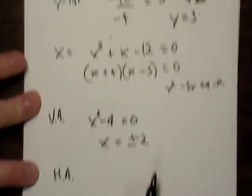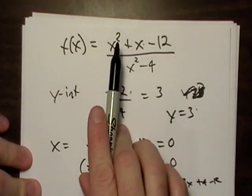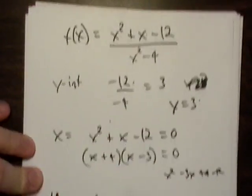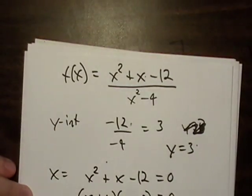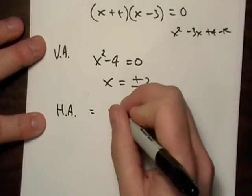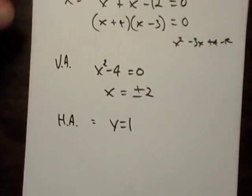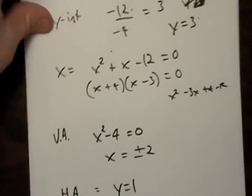Horizontal asymptote. The degree of the numerator and the denominator are the exact same. The lead coefficient on here is going to be the asymptote, which is 1. We got some information here.